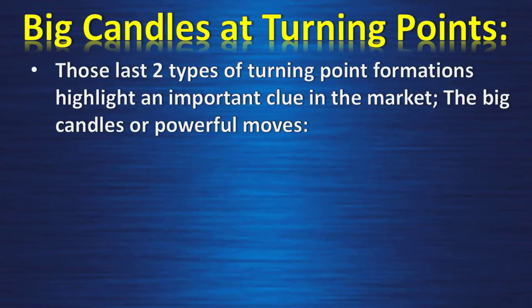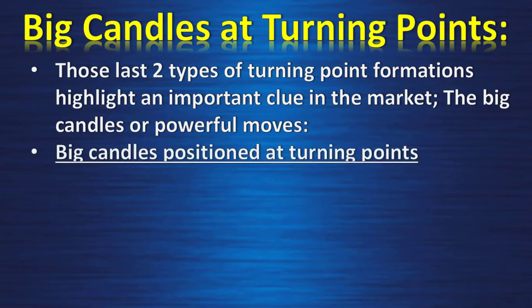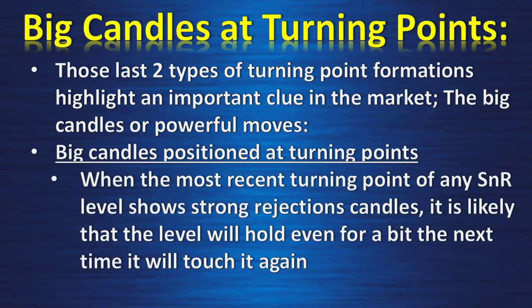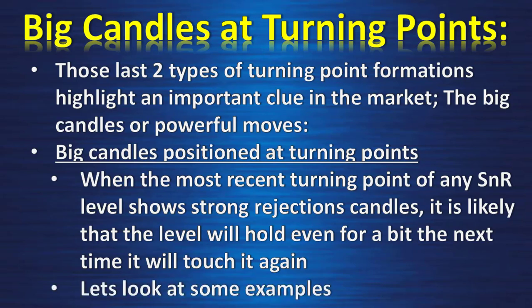In the last lesson, the last two types of turning points that we saw highlight an important clue in the market: the big candles, or powerful moves. The big candle position at turning points is very important. When the most recent turning point of any support and resistance level shows strong rejection candles, it is likely that the level will hold the next time it is touched. Let's look at some examples.